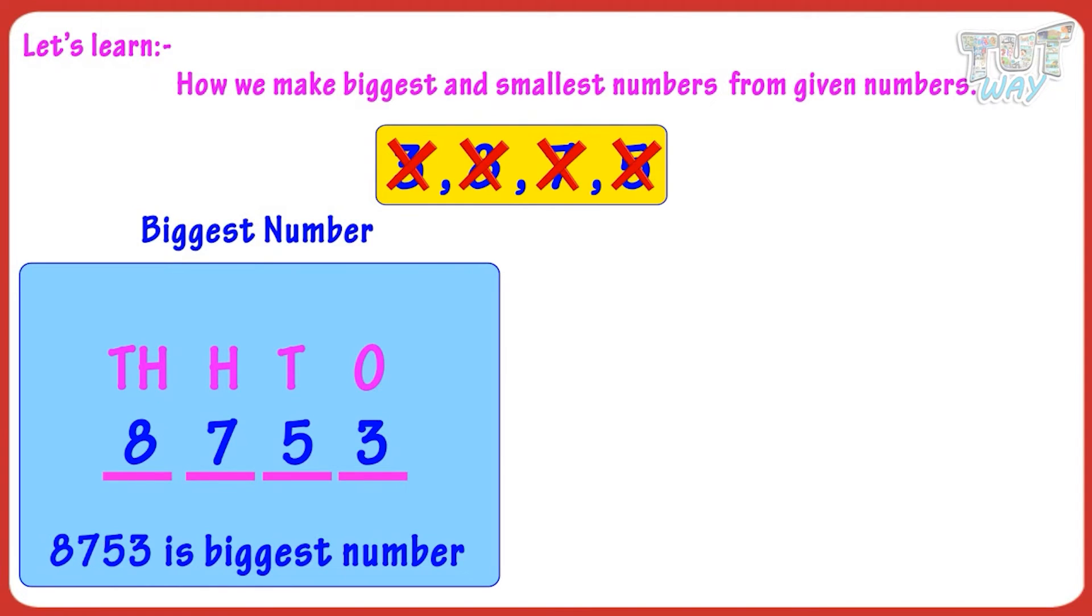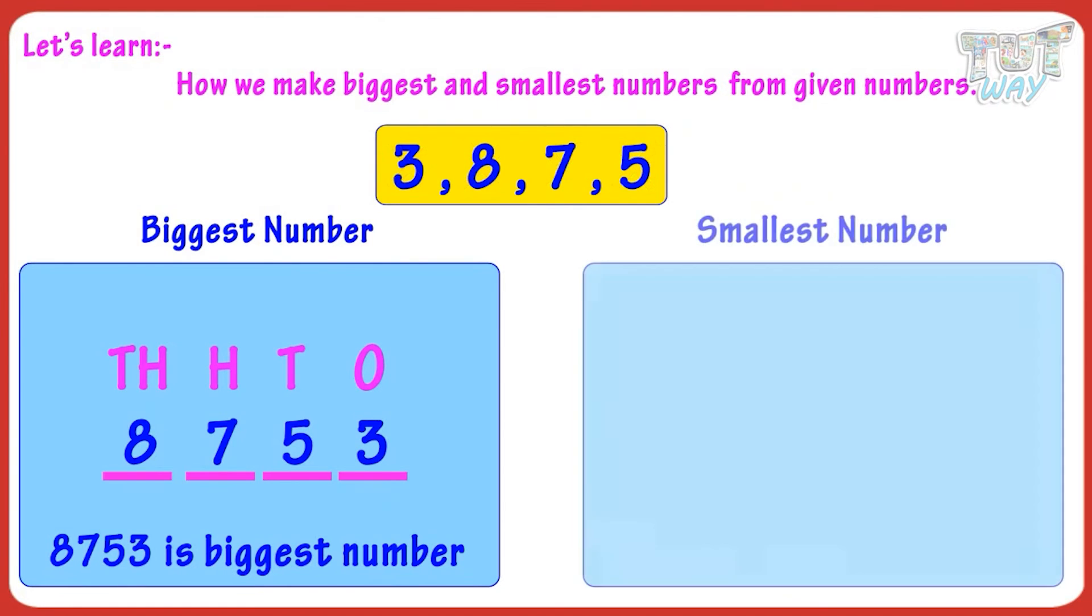So kids, you just need to always arrange numbers in decreasing order if you want to make the biggest number out of them. And you just need to always arrange numbers in increasing order if you want to make the smallest number.